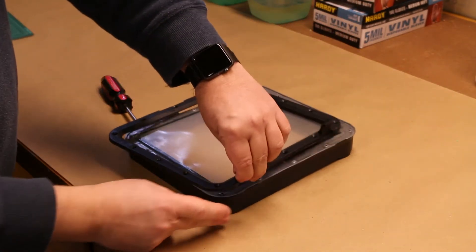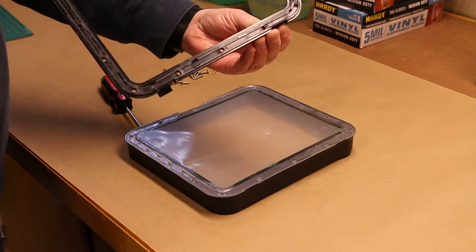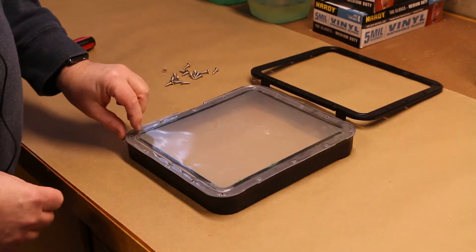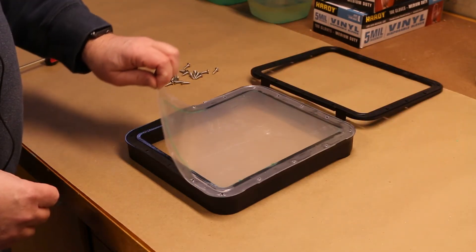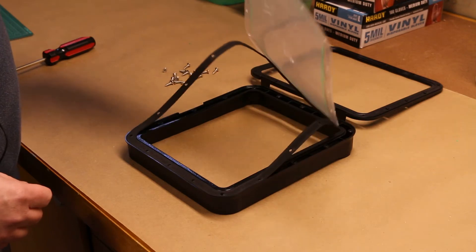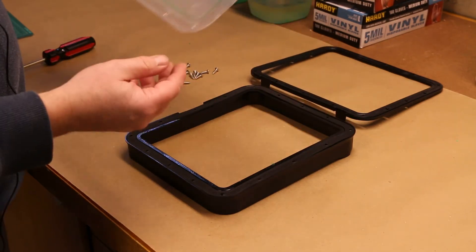Once all the screws are removed, then you can just remove the bottom frame. Then you can remove the old film. I should have been wearing my gloves because there is still resin in all the nooks and crannies.